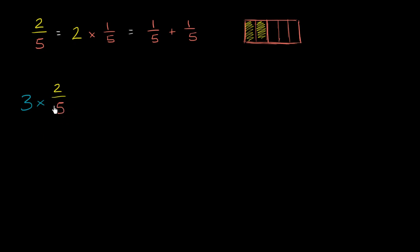Well, we just saw that 2/5 would be the same thing as, so let me just rewrite this as, instead of 3 times 2/5 written like this, let me write 2/5 like that. So this is the same thing as 3 times 2 times 1/5.